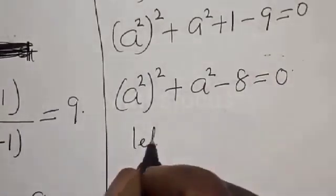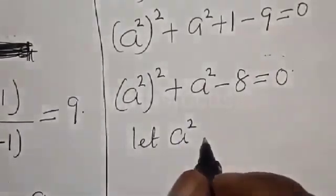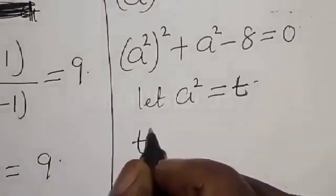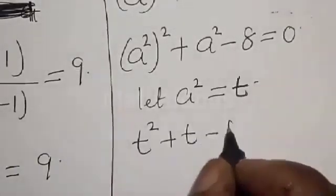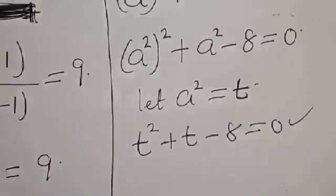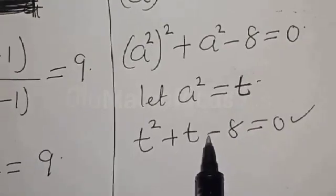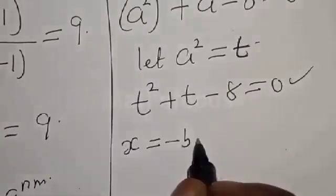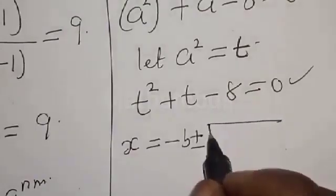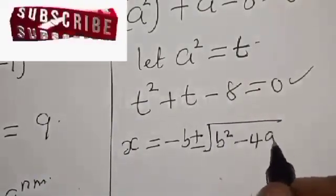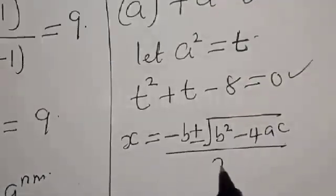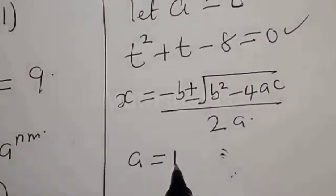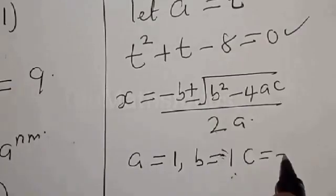Let a squared equal T. Then we have T squared plus T minus 8 equals 0. This is a quadratic equation, solved using the quadratic formula: T equals minus B plus or minus the square root of B squared minus 4AC, divided by 2A. Here A equals 1, B equals 1, and C equals minus 8.